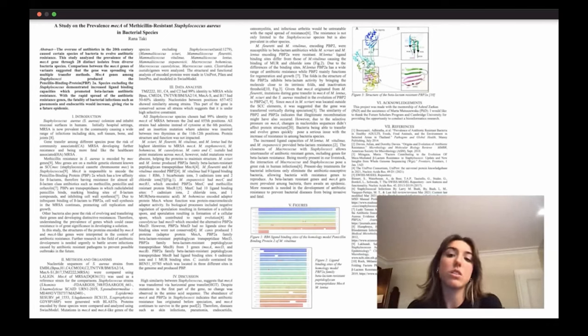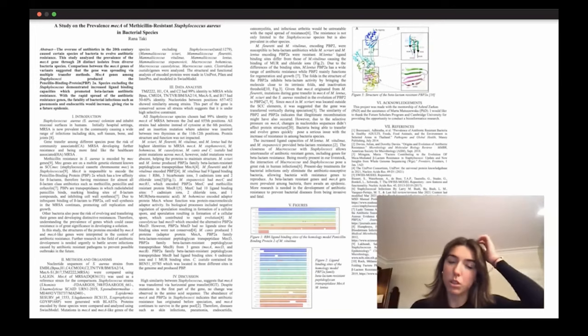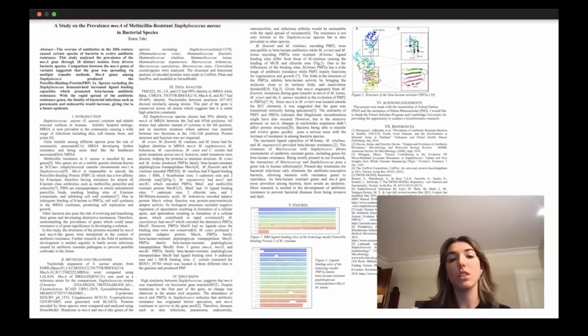So therefore, diseases such as skin infections, pneumonia, endocarditis, osteomyelitis, and infectious arthritis would be untreatable with the rapid spread of this resistance. The resistance is not only limited to staphylococcus species, but is also prevalent in other species.